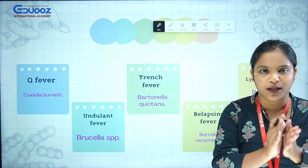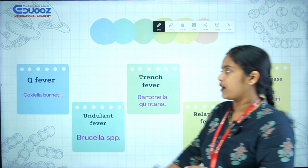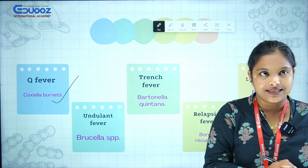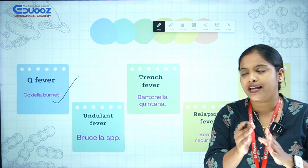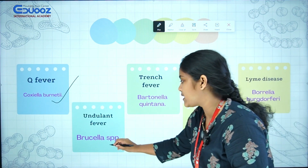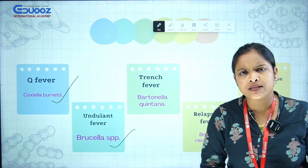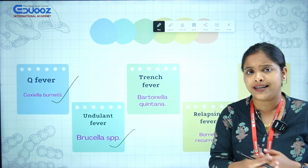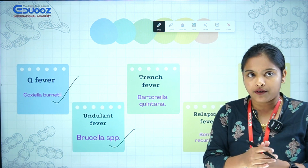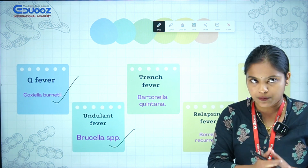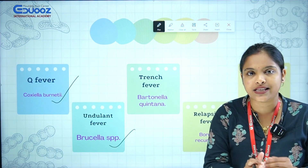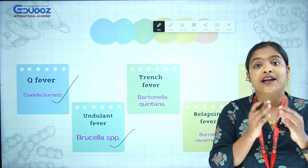We are going to cover Q Fever, which is caused by Coxiella burnetii. Then undulant fever, caused by Brucella species — Brucellosis is a zoonotic disease. Q Fever is Coxiella burnetii. Undulant fever is Brucella species. Trench fever is Bartonella.